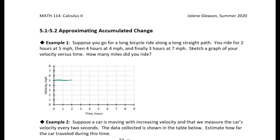And then for the next four hours, you rode at four miles per hour, so that's down here. And then finally, the last three hours, you're riding at seven miles per hour, so up here. That's a sketch of the graph.